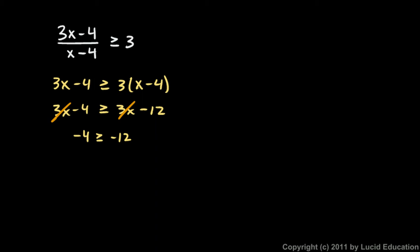So here's the approach that you should do instead. Take this 3 and move it over to the other side, so you get 3x minus 4 over x minus 4 minus 3 is greater than or equal to 0, and then rewrite this minus 3 with the same denominator.